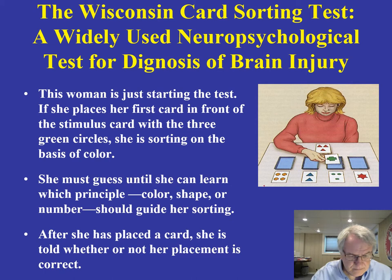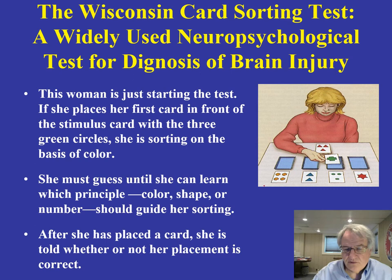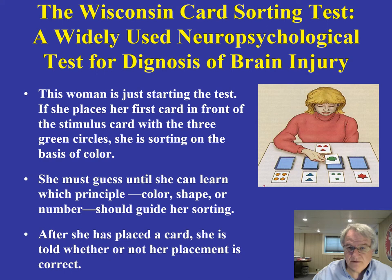When we were going over methods, I mentioned presenting methodology unique to each particular area. The field of neuropsychology has a number of ways of trying to assess and diagnose brain injury. This is a very common one — the Wisconsin Card Sorting Test — and there's a videotape you should have watched on this, which will help you understand it even better than what I have illustrated on this particular slide.